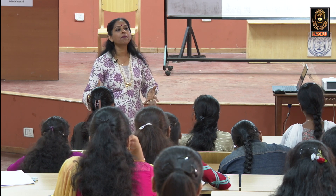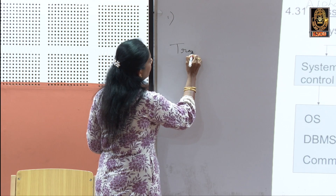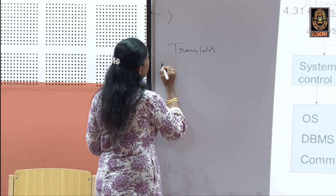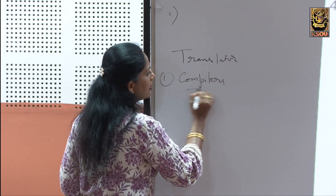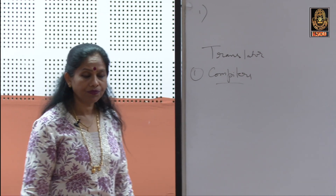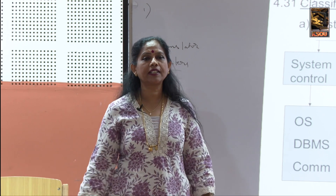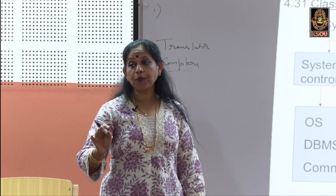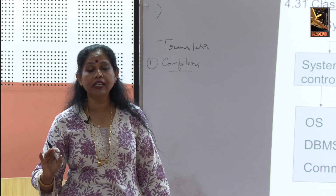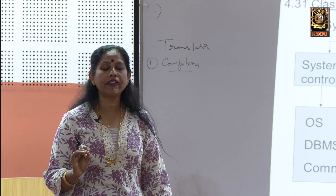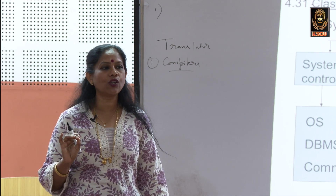Compilers, interpreters, and assemblers are called language translators. Your computer doesn't understand anything unless it is in low-level language — machine language — which is zeros and ones. Earlier, programming was done in zeros and ones, which was very difficult. If a mistake was made, it was very difficult to debug the program — debugging means finding and correcting errors.